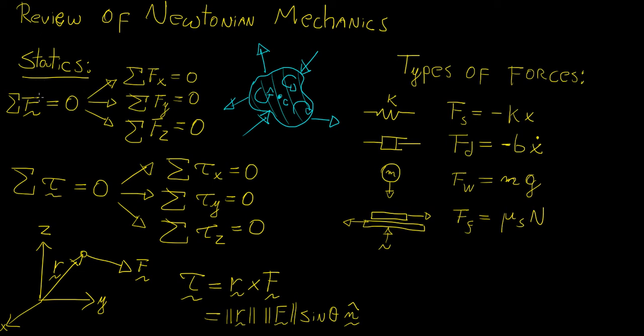So the way that we represent that mathematically is we say that sum of the forces is equal to zero, and because force and torque are both vector quantities we can break this down into three separate equations. So we take sum of the forces about each of the axes and all of them should add up to zero.